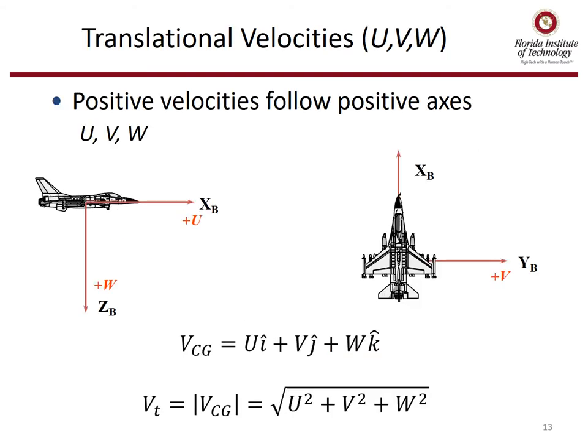Next, we'll find translational velocities. Positive velocities follow positive axes. Forward velocity is given the symbol U, side velocity is given V, and downward velocity is given W. Therefore, the velocity of the center of gravity is the vector sum of the forward, side, and downward velocity components. True airspeed is the magnitude of the velocity of the CG, and it's the square root of the sum of the squares of the forward, side, and downward velocity.